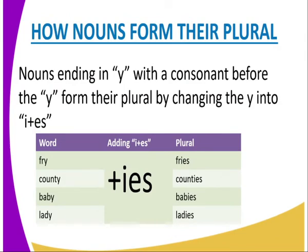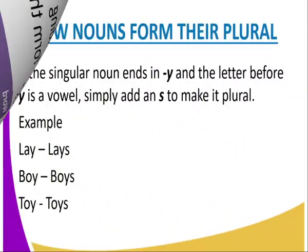Nouns ending in -Y with a consonant before the Y form their plural by changing the Y into I and adding -ES. For instance: fry to fries, county to counties, baby to babies, lady to ladies.